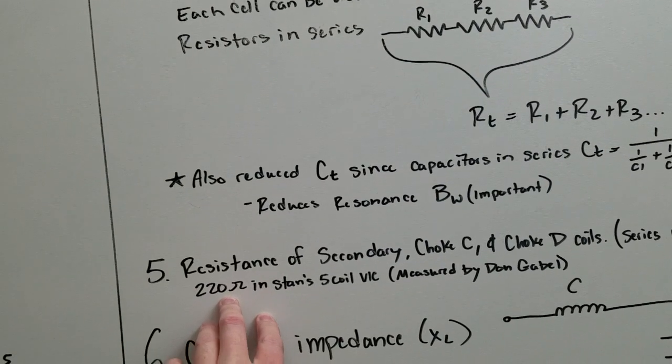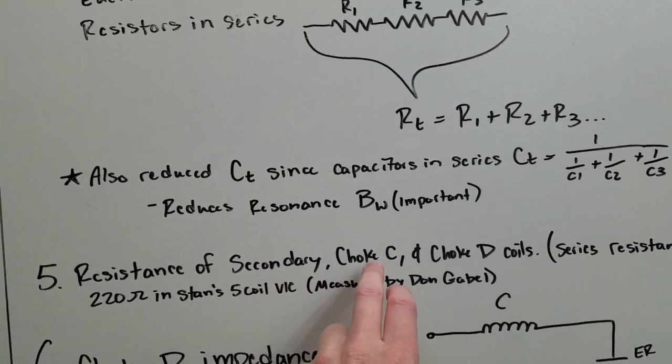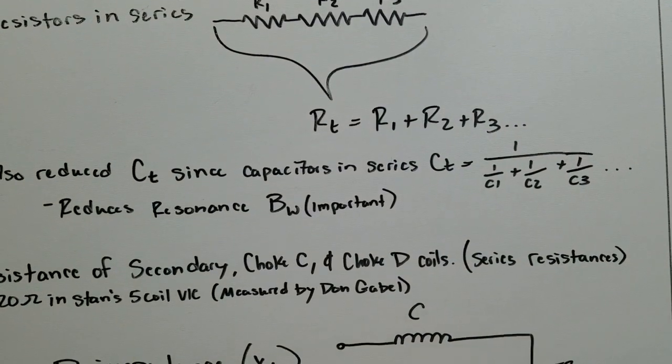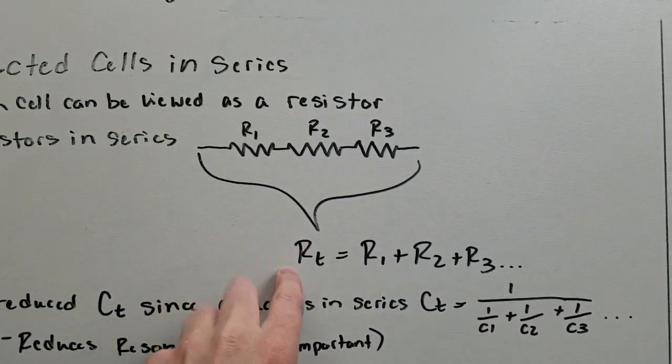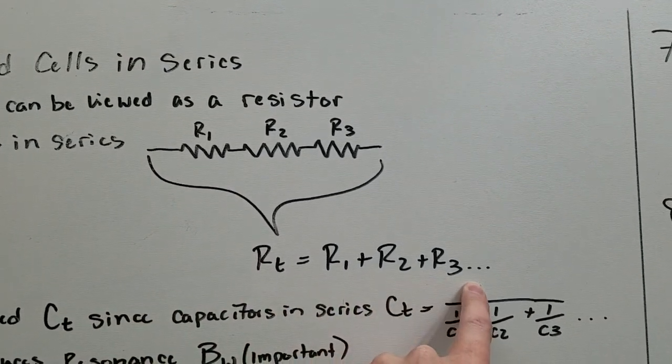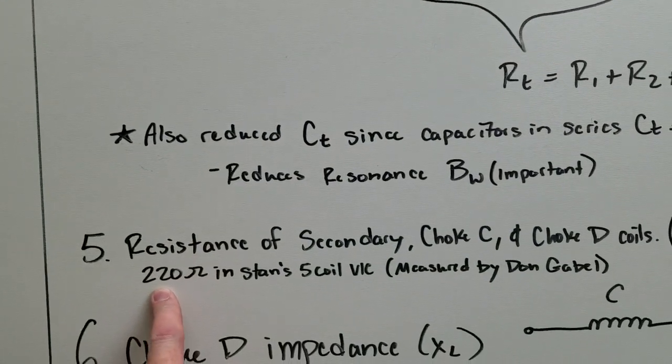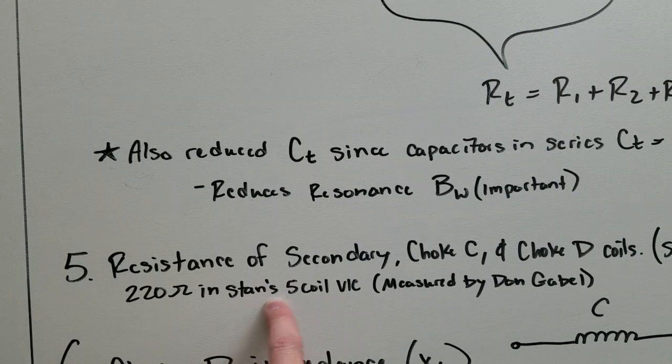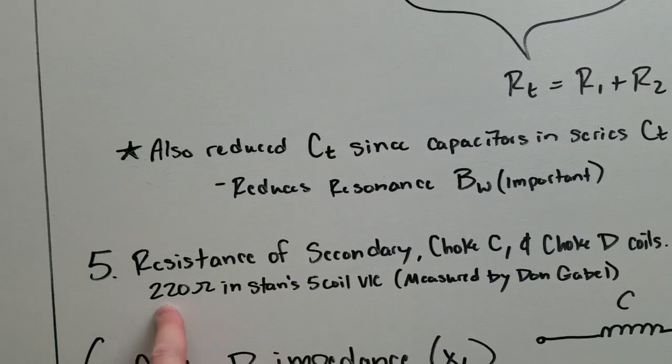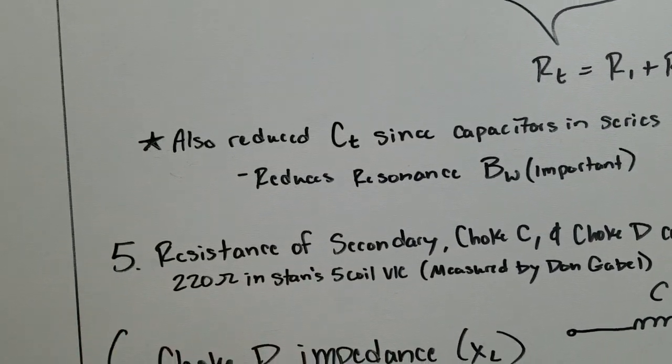And number five, the resistance of the secondary and the choke coils. They're all in series. So that gives you the same formula here. They're measured by Don Gable years ago. He actually got a hold of one of Stan's original five coil VICs, about 219, 220 ohms.